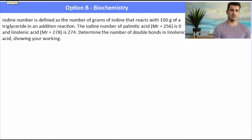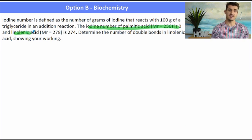In this second example, we're asked to determine the number of double bonds from the iodine number. So the iodine number of palmitic acid is zero and linoleic acid is 274. Determine the number of double bonds in linoleic acid.